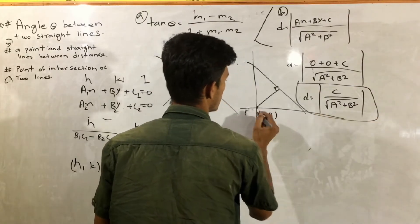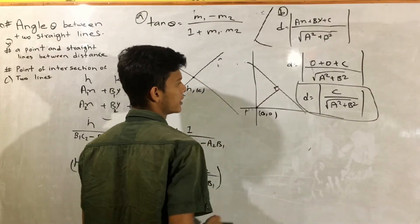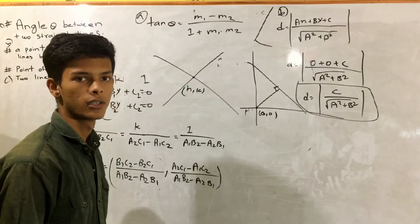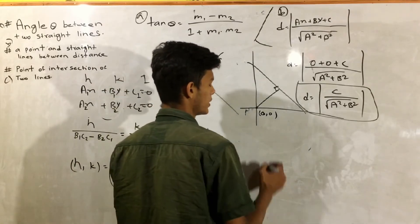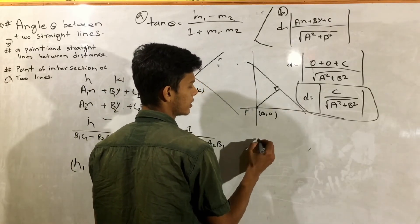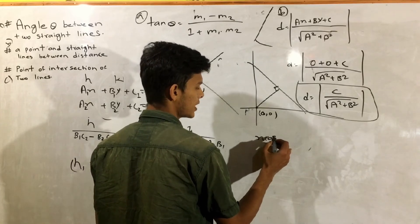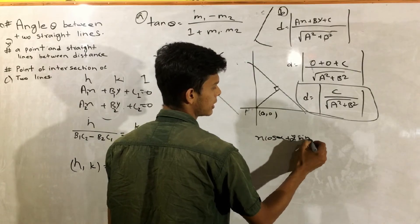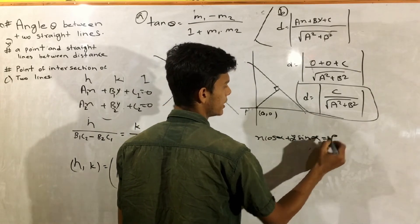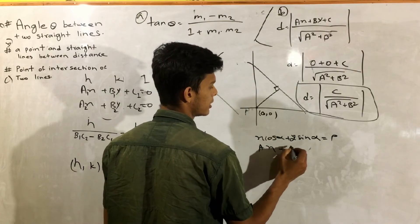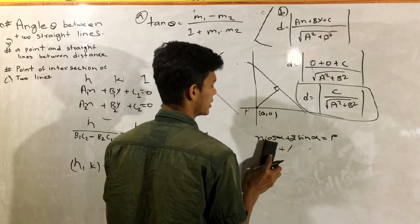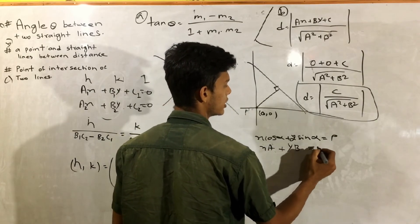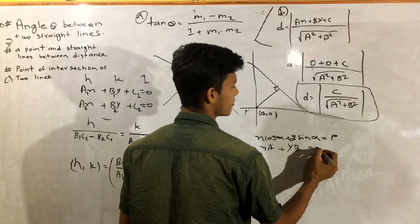Here's the origin: distance is c divided by root under a squared plus b squared. I will find this — this is the reason why: x cos alpha plus y sin alpha is equal to p. Then I will compare. I will find x: a, y: b, and this is the same. c is equal to minus c.